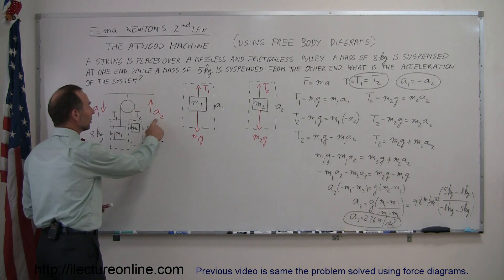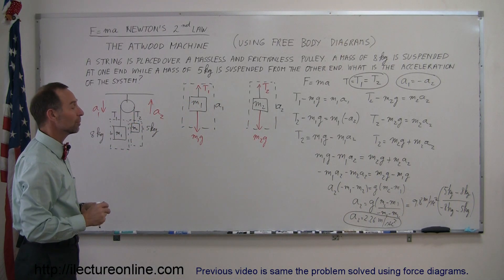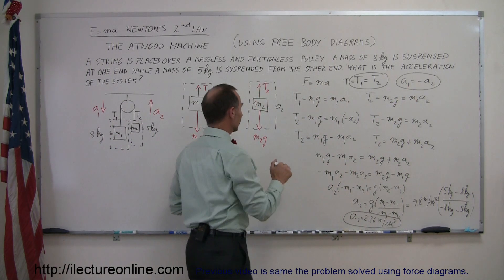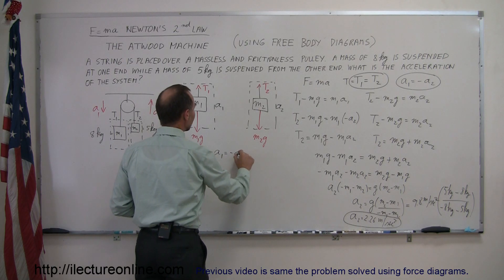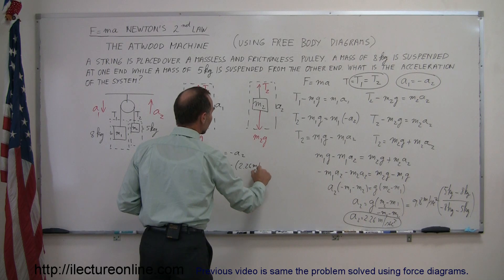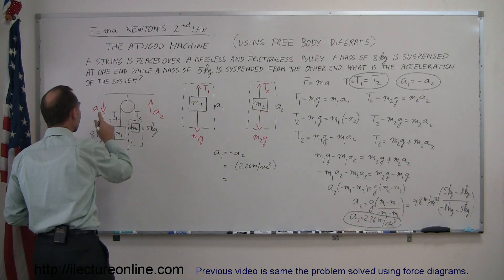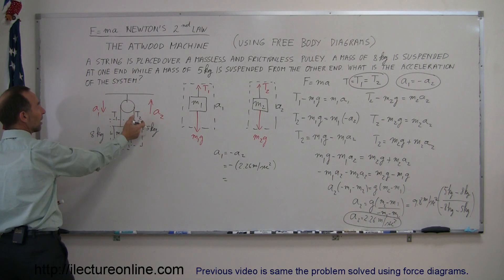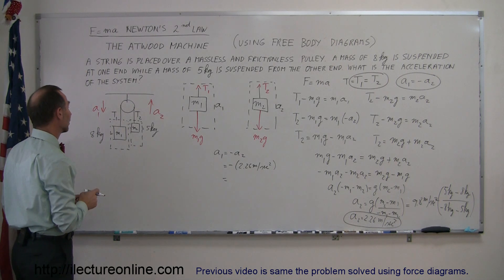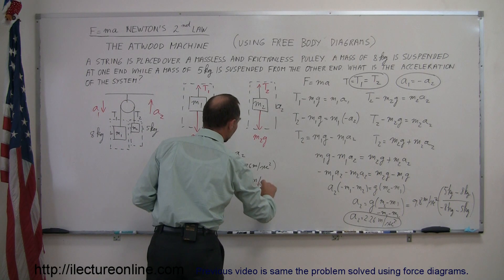Notice that A2 was assumed to be a positive direction, and that's the answer we got. We got a positive 2.26 meters per second squared. Since A1 is equal to the negative of A2, A1 is minus 2.26 meters per second squared. You can see that the magnitude must be the same, because both weights are attached to the same string, but A1 is a negative direction.